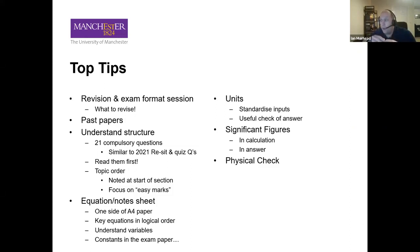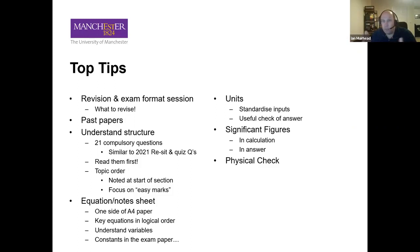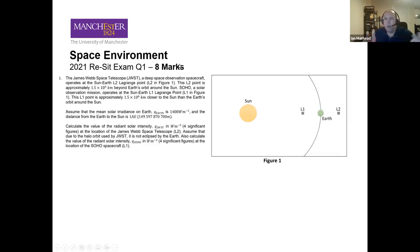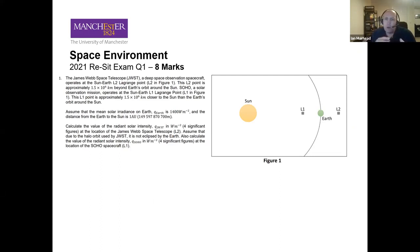Finally, if you understand the physics of what's happening, you can normally work out whether your answer is physically real. If you're asked for a velocity and you get something faster than the speed of light, you've probably made an error. These are all ways to look at your exam answers and gain marks as you go along. I'm going to move on to looking at the questions themselves, extracted from past papers, looking at how we extract information from them.